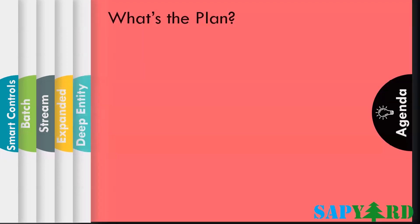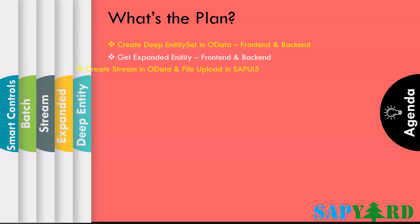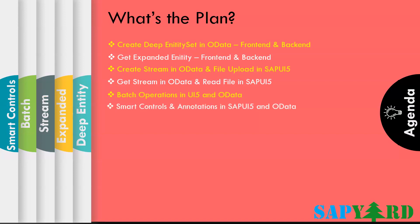The agenda of this training is quite simple — we have six topics to cover: Create deep entity set in OData, frontend and backend; Get expanded entity, frontend and backend; Create stream in OData and file upload in UI5; Get stream in OData and read file in UI5; Batch operations in UI5 and OData; and finally, smart controls and annotations in SAPUI5 and OData.